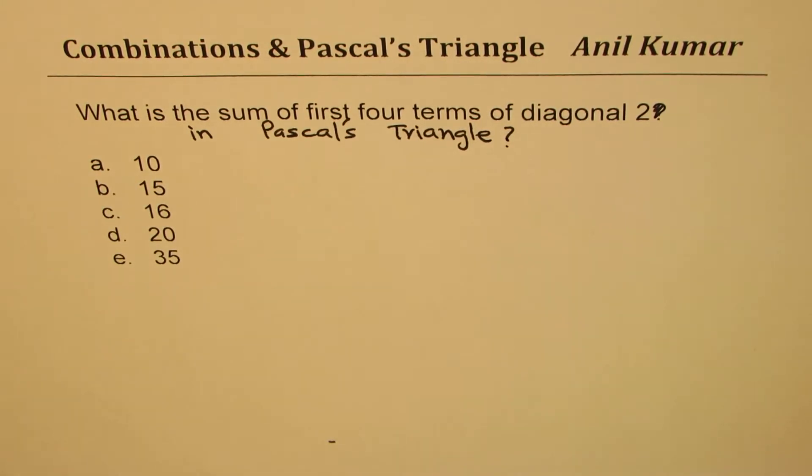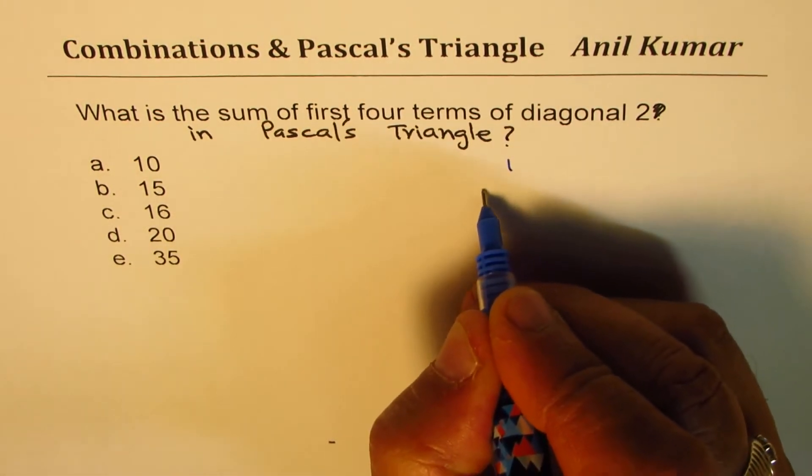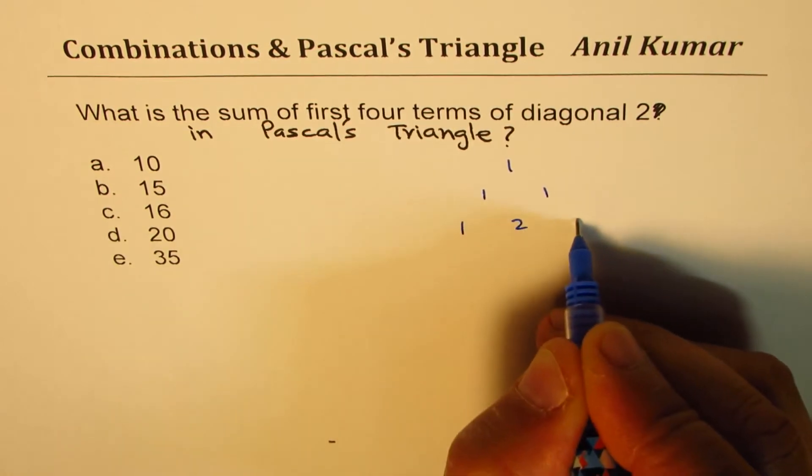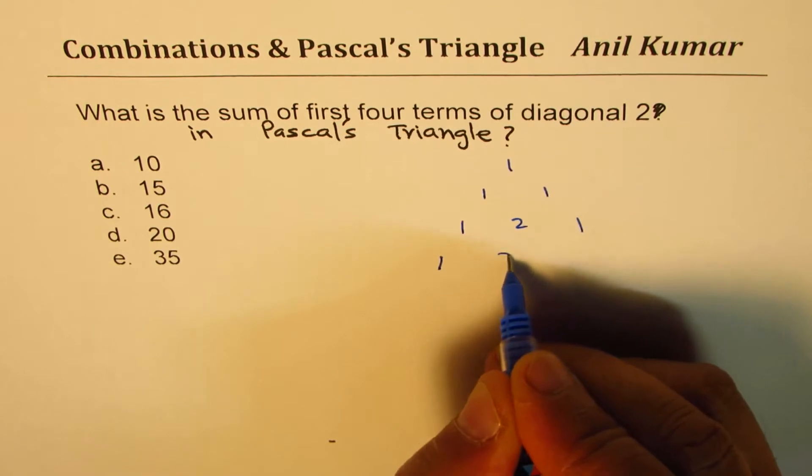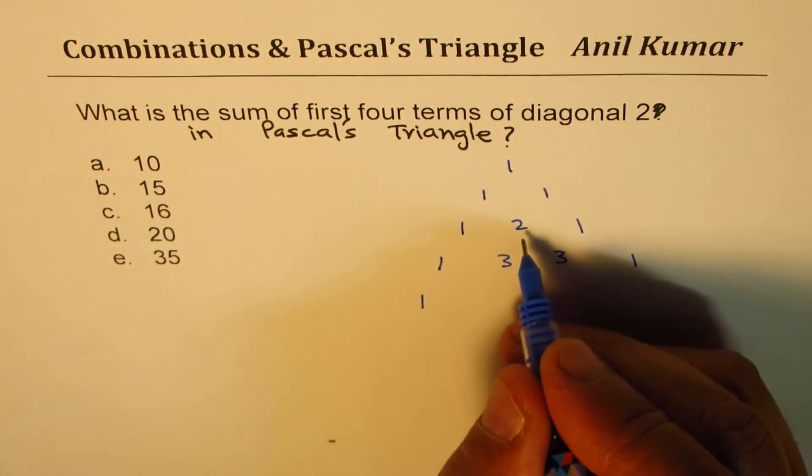Now one method of course is that you just draw the Pascal's triangle, right? So starting with one, it's like one, one, and then when you come here it's one, two, and one. When you combine it is one, and then this should be three, three, and one.